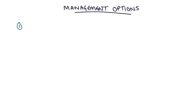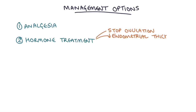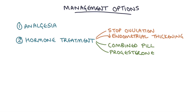For management, the main priority is to offer analgesia for the patient's chronic or cyclical pelvic pain. The first-line treatment is hormonal medications that stop ovulation and reduce endometrial thickening. By stopping ovulation, you reduce the oestrogen and progesterone that thicken the endometrium and cause shedding during menstruation. This can be achieved using the combined oral contraceptive pill, progesterone such as medroxyprogesterone acetate in the depot injection, or the Mirena coil. All of these work to prevent ovulation and reduce endometrial thickening.